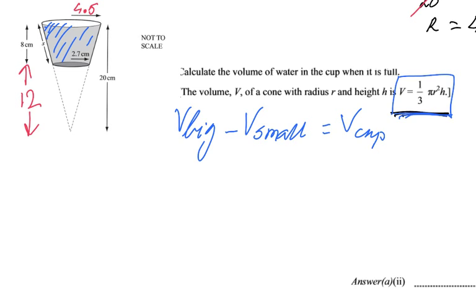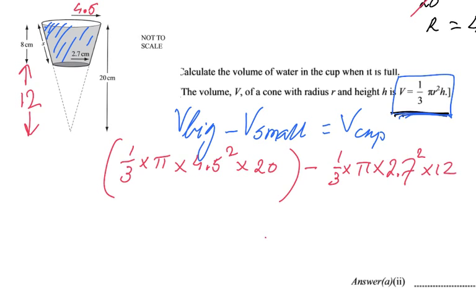For the big cone, the volume is one-third times π times the radius squared, and the radius is 4.5, so 4.5 squared times the height which is 20. We have to take away the part we're not interested in, which is also a cone: one-third times π times the radius, now 2.7 squared, times 12.